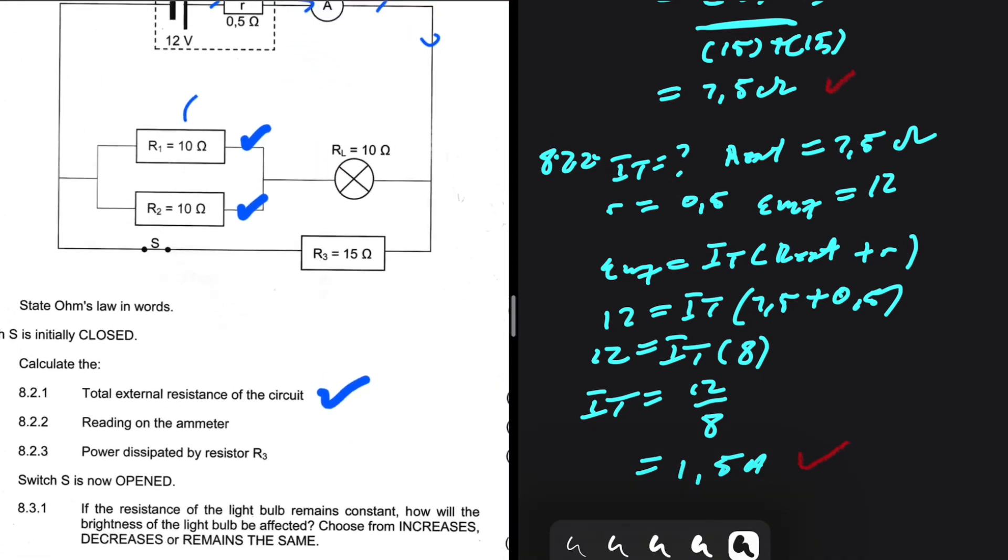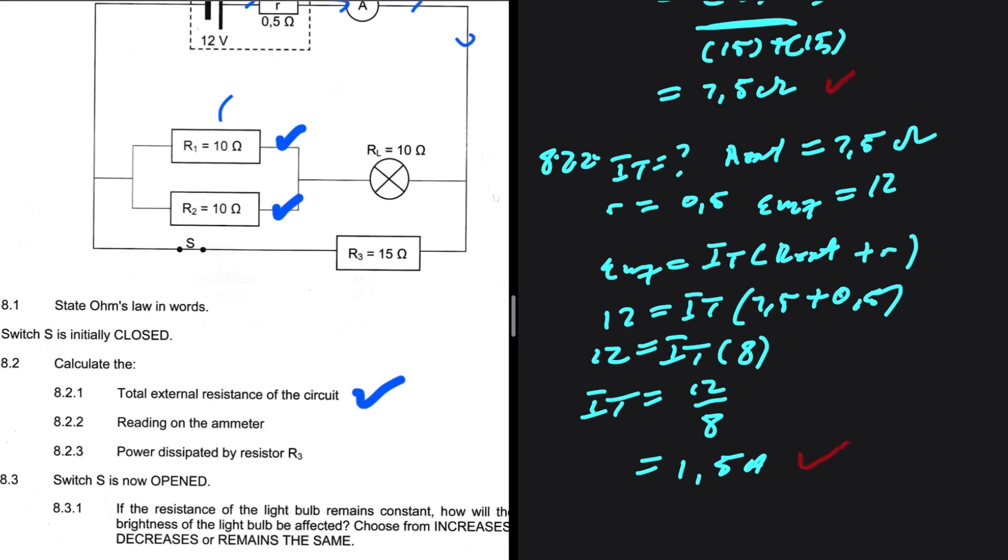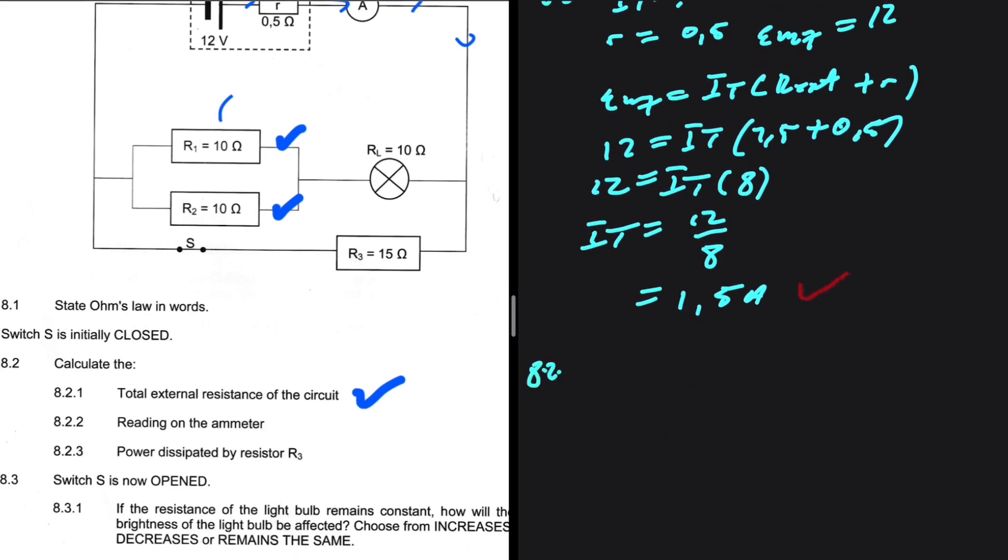8.2.3. What's the marker location? 4 marks. 8.2.3. We're interested in the power dissipated by R3.